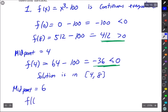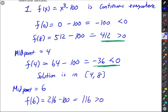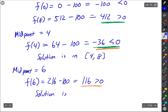What's f(6)? 6³ is 216 - 100 is 116 which is positive. Which means now if I pair this positive with this negative I get a smaller interval again. So the solution is in [4,6].